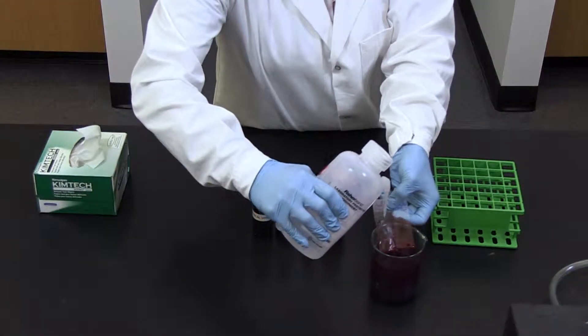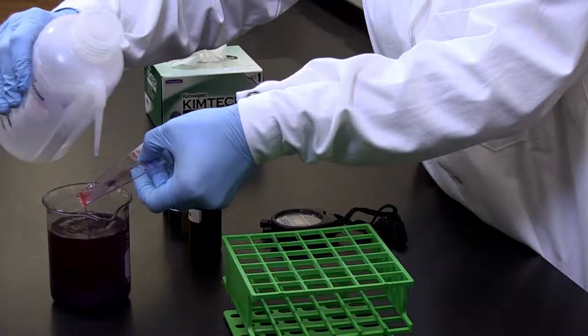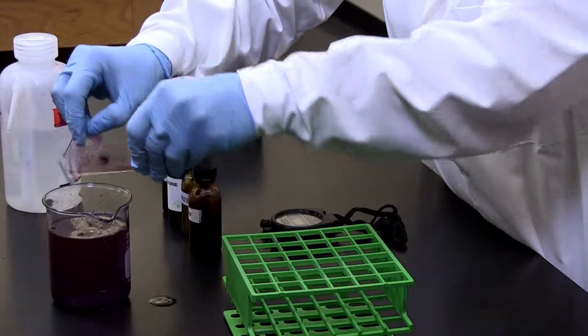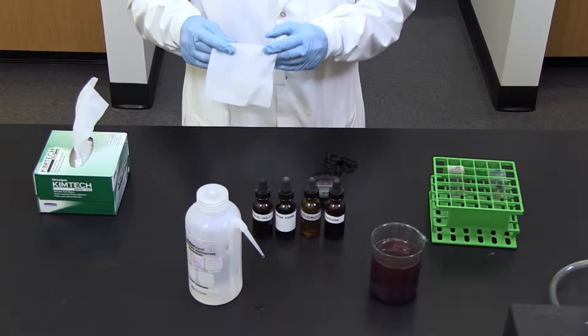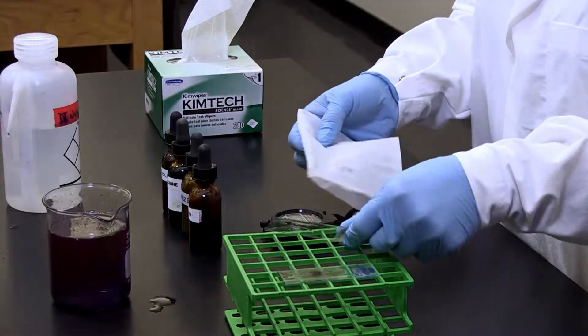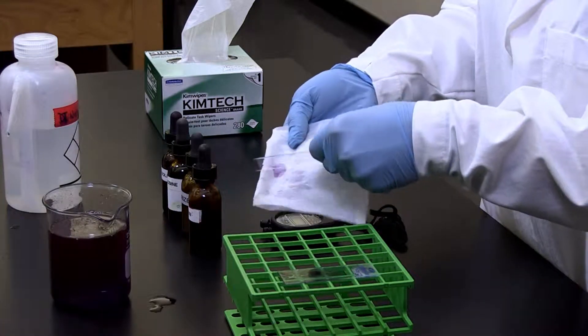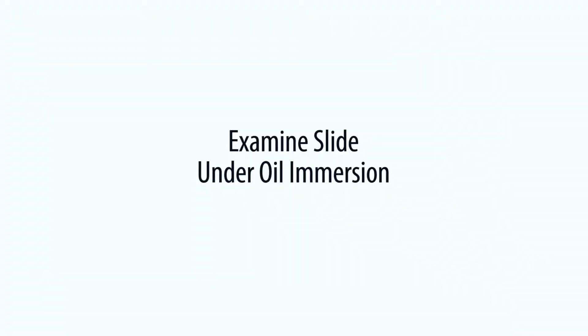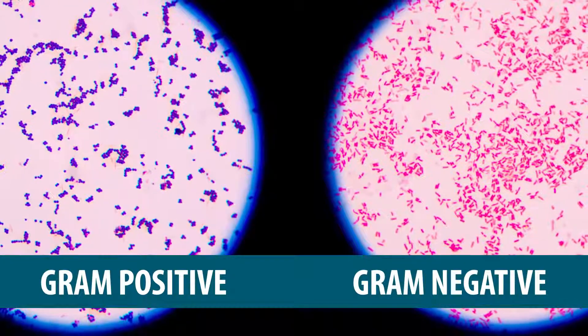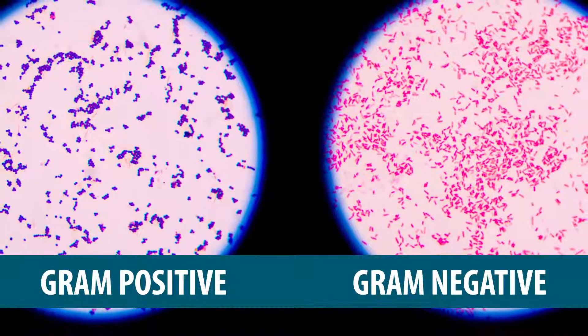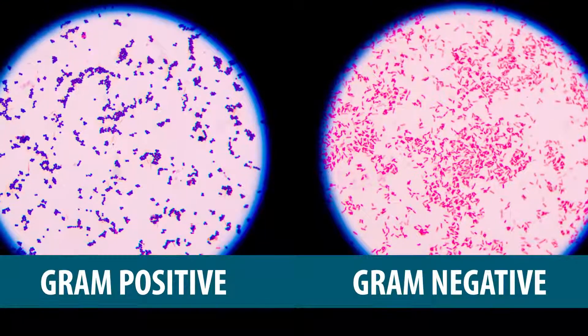Eight, rinse the slides gently with deionized water to remove excess safranin. Nine, blot the slides with bibulous paper to remove excess water. And ten, examine the slides under oil immersion. The S. aureus cells staining purple are designated gram-positive, while the staining pink E. coli cells are deemed gram-negative.